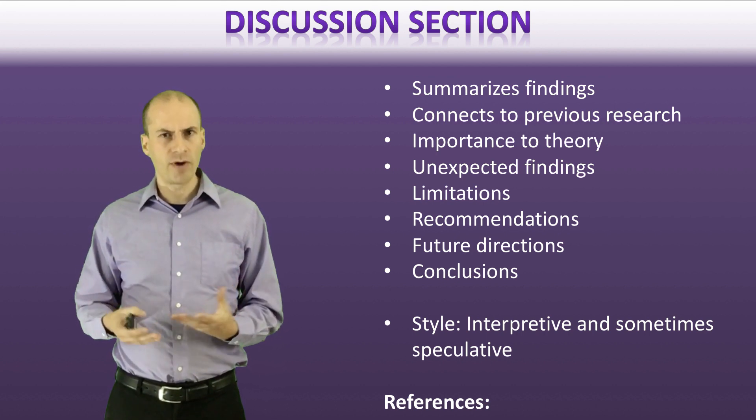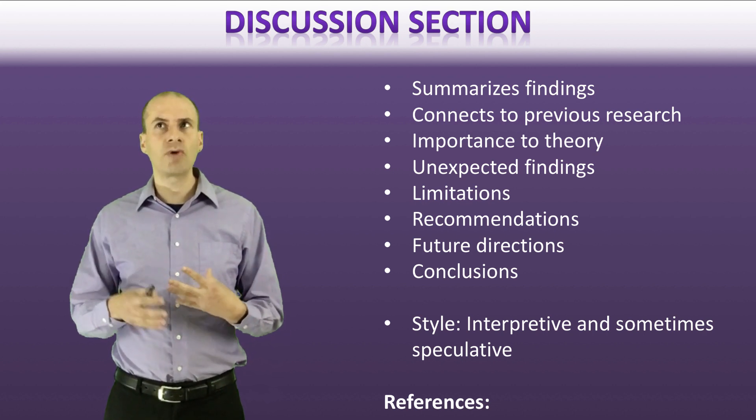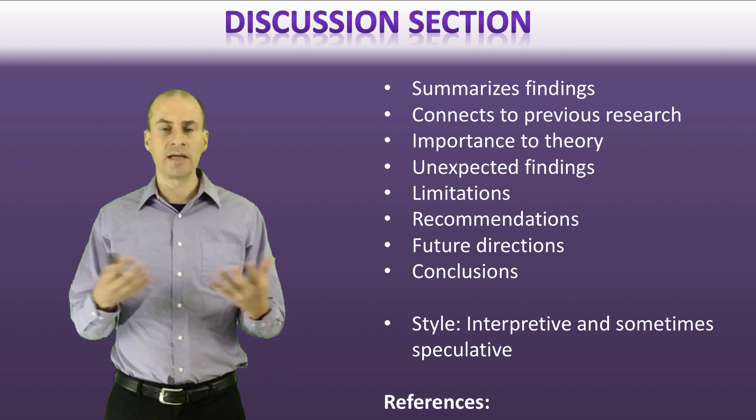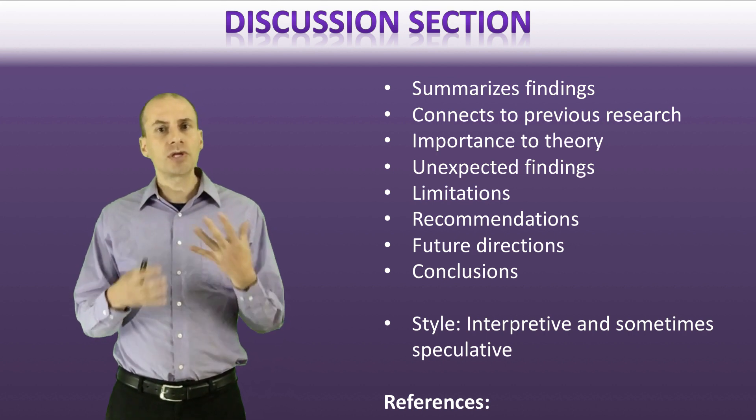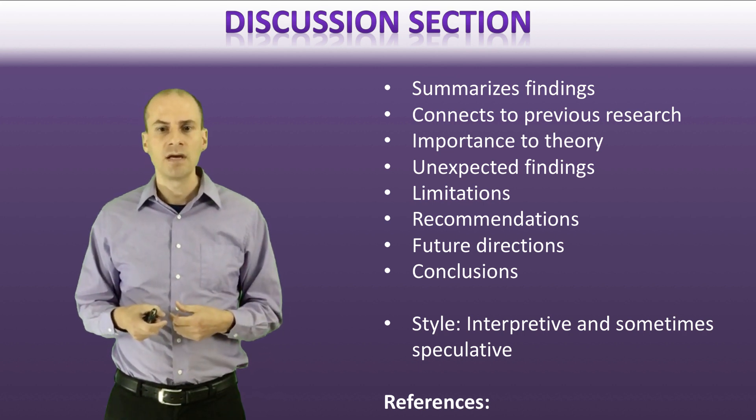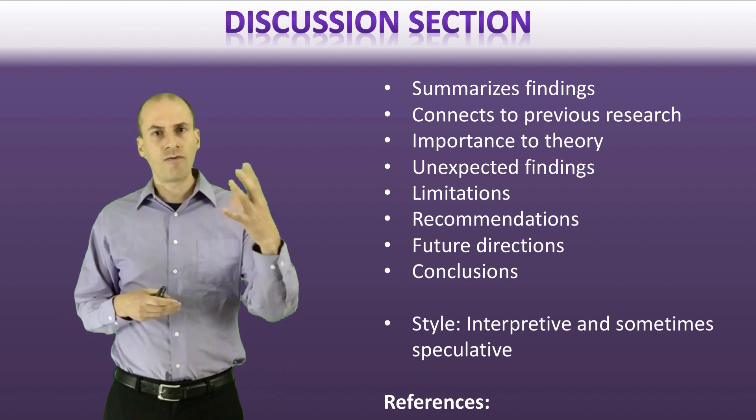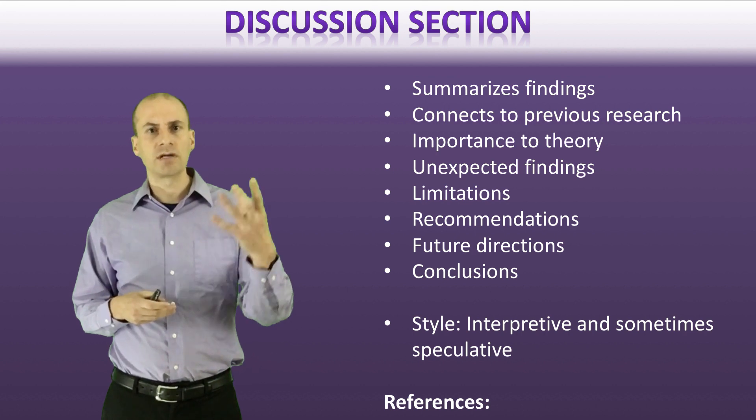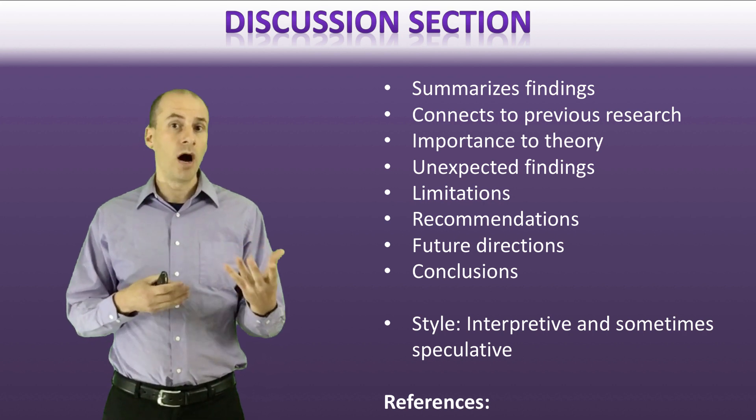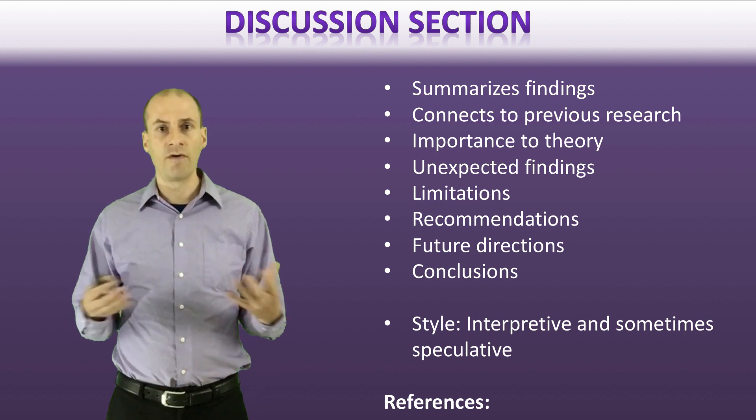All right. The discussion section is sort of a different beast than the rest of the paper. This is a section that tries - the authors are trying to synthesize what they found for you and explain it in context. So usually the first paragraph or two is going to be summarizing the results of the study, the findings of the study. And this is often where the researchers will emphasize the key things that they found. As they go forward into the results in the following paragraphs, they're going to continue to talk about the results, but very often they'll do it in conjunction with talking about other research that has looked at these questions before. So putting that research in context of larger scholarship.